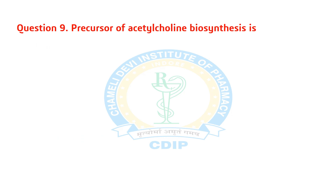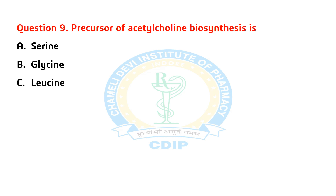Question 9. What is the precursor of acetylcholine biosynthesis? A) Serine. B) Glycine. C) Leucine. D) Isoleucine. Answer: A. Serine.